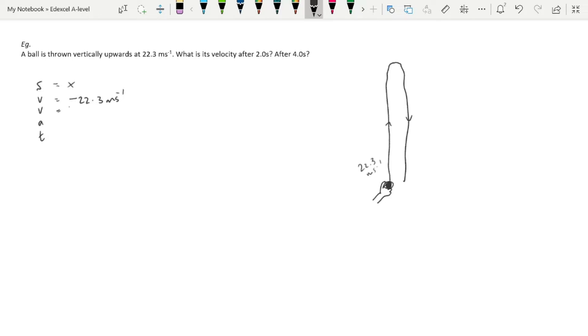We don't know v - that's what we're after. We know that a is 9.81 because this object is accelerating under gravity as it moves up and comes back down. Our t is going to be first 2 seconds, then 4 seconds.